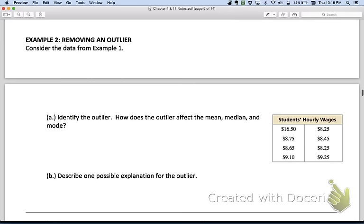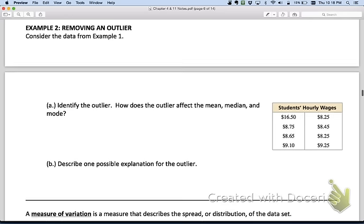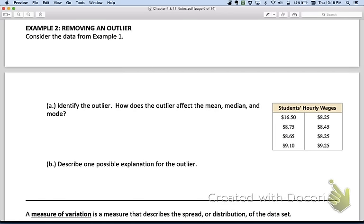So if I have an outlier, it's really going to affect the mean, median, and mode. So when we say that the outlier is $16.50, they want us to know how does the outlier affect the mean, median, and mode.